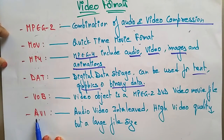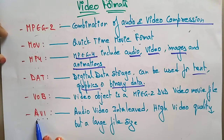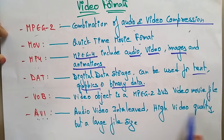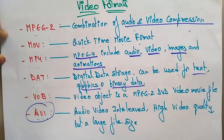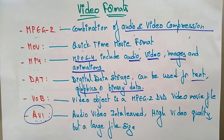AVI stands for audio video interleaved. It produces high video quality but has a larger file size. The .avi extension files produce high video quality but occupy a lot of space — it is a large file size. So this is about video. Thank you.